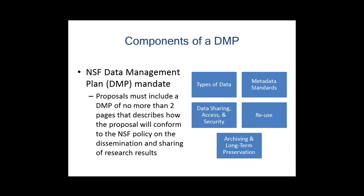Components of a DMP — an acronym for data management plan. This is based on NSF, which was really the leader in requiring data management plans with grant proposals. In January 2011, they began requiring a no-more-than two-page document that outlines how you are going to manage the data associated with the project. It includes types of data, metadata standards, data sharing, access, reuse, and archiving. These really do align with the research data life cycle I talked about earlier.